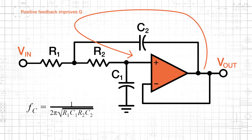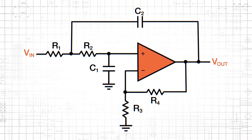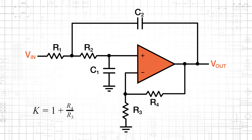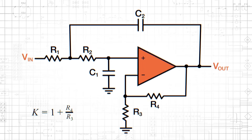The cutoff frequency of the unity gain Sallen-Key low-pass filter can be calculated as shown here. We can create a non-unity gain active filter by including the familiar resistive divider in the negative feedback path, with low frequency gain calculated the same as with the typical op-amp-based non-inverting amplifier.